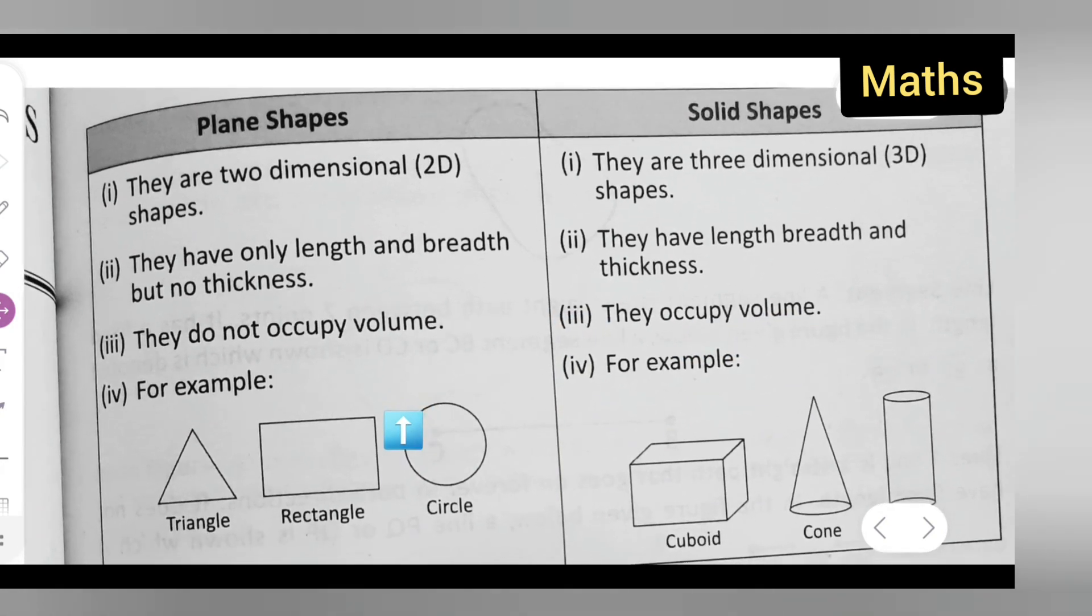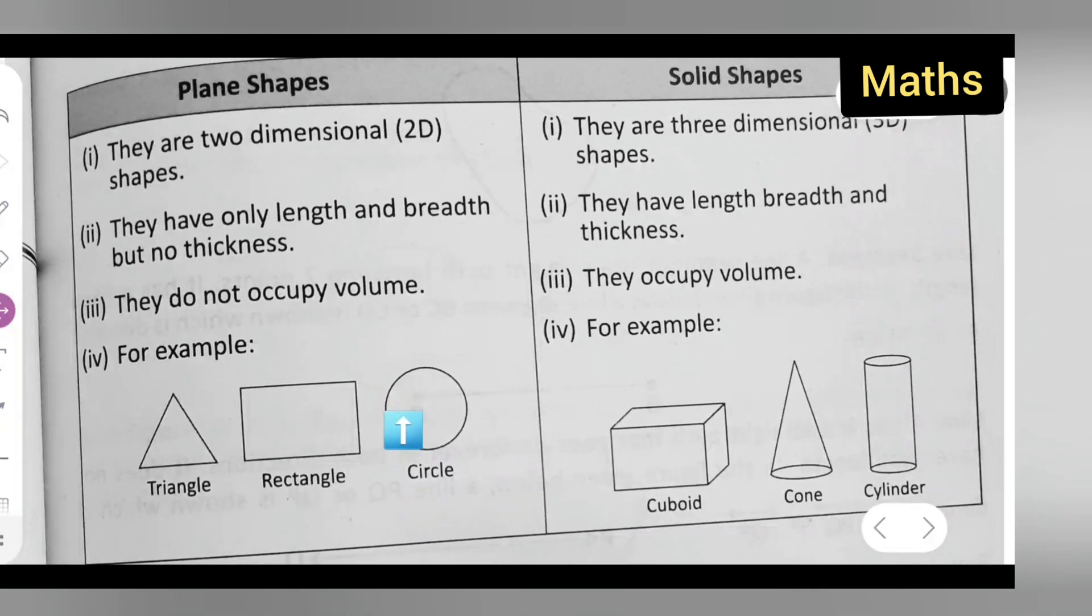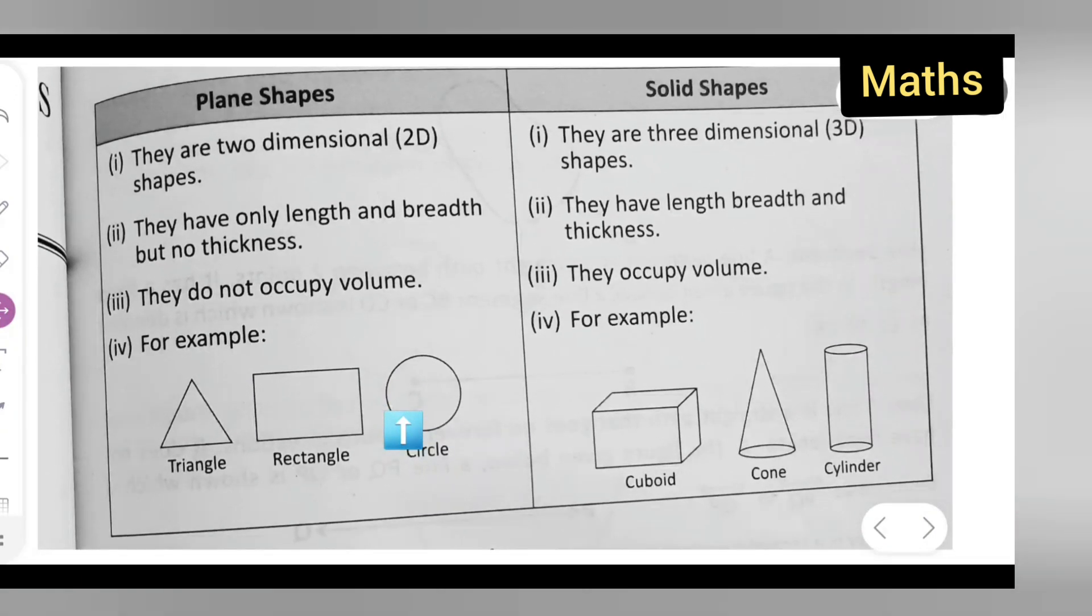And finally, the examples of the plane shapes and the solid shapes. Here are the examples of the plane shapes. Triangle, rectangle, circle are the plane shapes. Whereas, solid shapes, cuboid, cone and cylinder are the solid shapes.